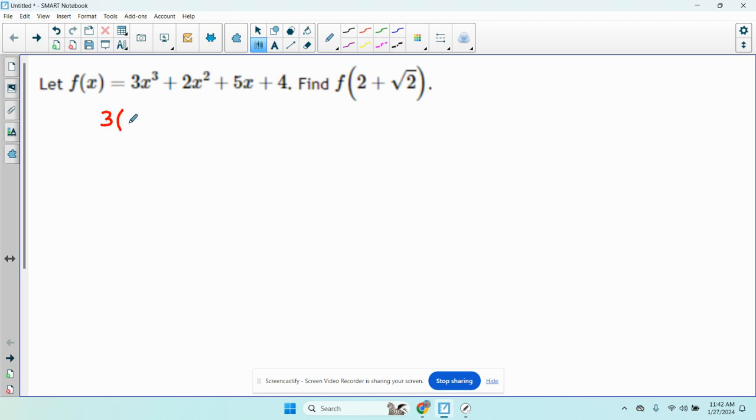So we have 3 times 2 plus the square root of 2. I'm going to rewrite this three times. 2 times 2 plus root 2 twice plus 5 times 2 root 2 plus 4.